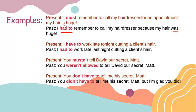We also change the verb 'to be.' Instead of using 'is,' we use the past form, which is 'was.' The second example. Present: 'I have to work late tonight cutting a client's hair.' The past would be: 'I had to work late last night cutting a client's hair.'